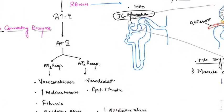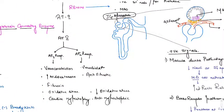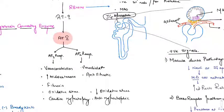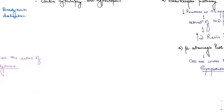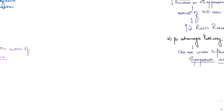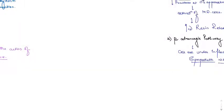Now we talk about angiotensin 2, which is the main and most potent active hormone in this system. Angiotensin 2 is the major hormone responsible for the downstream actions of the renin-angiotensin system.